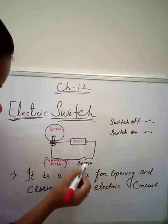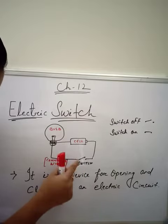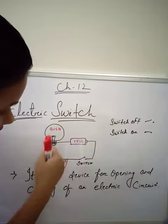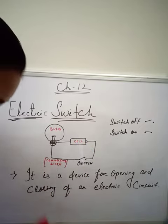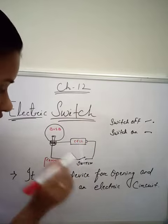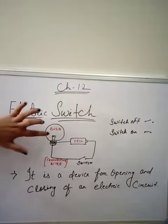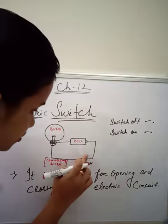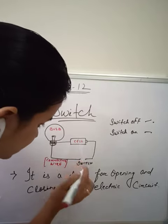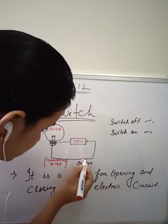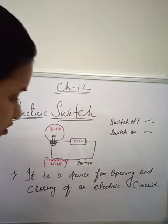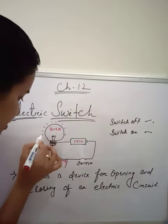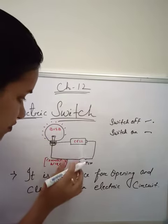Here the switch is in the off position because it is open. As it is open, the circuit is also open, and as I told you, in an open circuit current is not flowing, so the bulb will not glow. But if I switch it on, the bulb starts glowing.